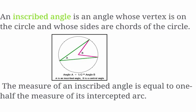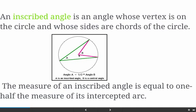The other type of angle is an inscribed angle. Whereas a central angle has its vertex at the center of the circle, the inscribed angle has its vertex on the edge of the circle, and its sides are chords. The measure of an inscribed angle is equal to one-half the measure of its arc. So if the arc is 60 degrees, the inscribed angle would be 30 degrees, and its central angle would be 60 degrees.